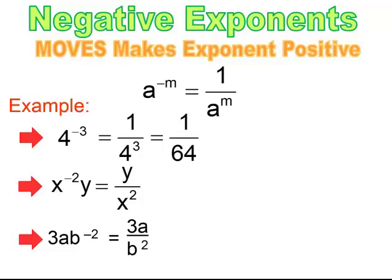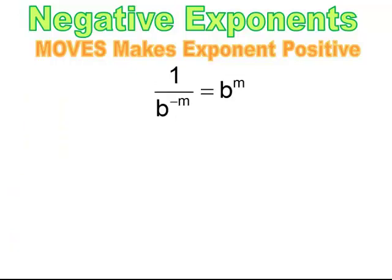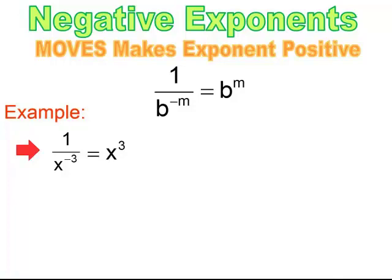If the negative power is in the bottom, you want to move it to the top. If it's on the bottom and you have a 1 on top, you end up getting the base to the positive m power. For example, 1 over x to the negative 3rd power: the power is negative so it's in the wrong position, so it moves to the top. Because what's on top is 1, I end up with just x to the 3rd power.